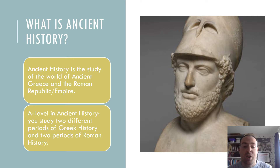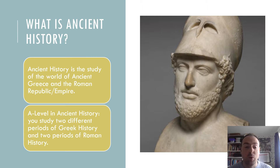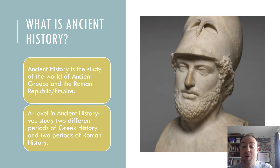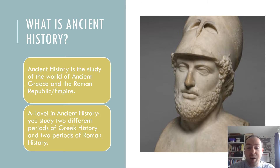So what is Ancient History? Well, Ancient History is the study of the world of Ancient Greece and Ancient Rome — the Roman Empire and the Roman Republic before it. In A-level Ancient History you will study two different periods of Greek history and two periods of Roman history, and I'm going to try and very briefly outline what those are. So you're getting a mixture of Ancient Greece and Ancient Rome, and again both of which are absolutely fascinating.